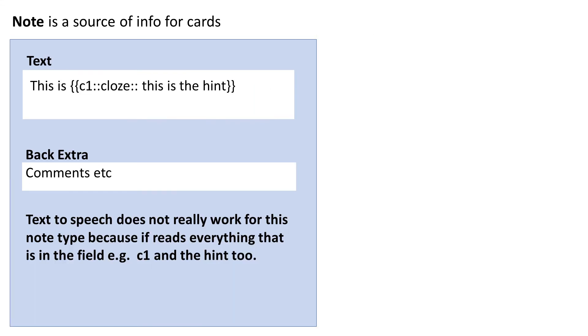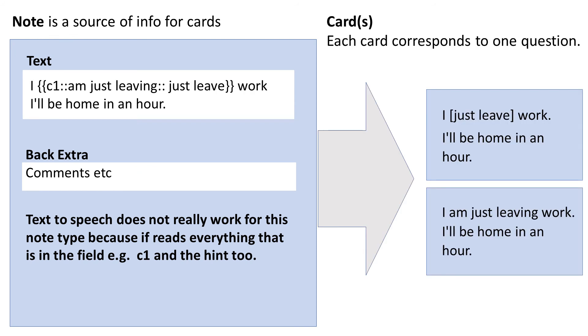The second amazing note type is cloze type with a hint. It's very good for learning grammar. In this case we see I put a verb in its basic form as a hint and my task is to type the correct form of the verb.